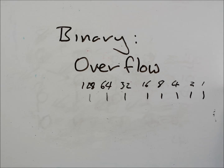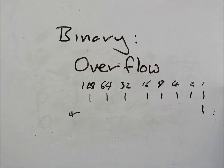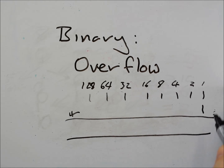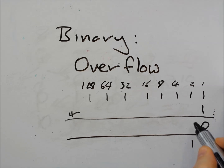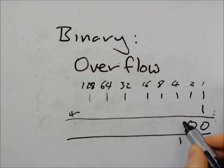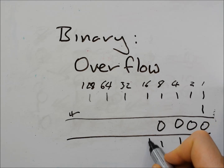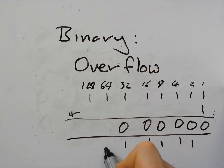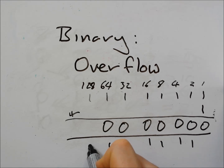Now what happens when we want to add 1 to it? Well, we do our addition, same as usual. 1 and 1 is 0, carry 1. 1 and 1 is 0, carry 1. 0, carry 1. 0, carry 1. 0, carry 1. 0, carry 1. 0, carry 1. 0, carry 1.